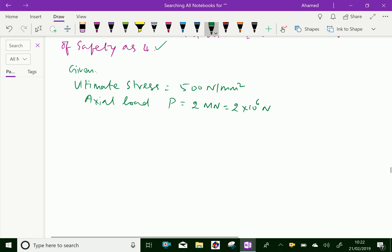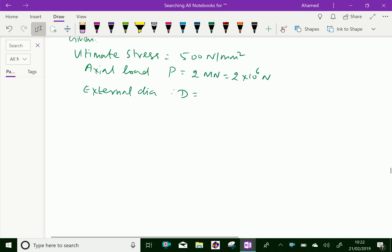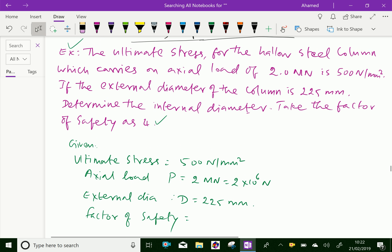External diameter of the column, that is D, equal to 225 mm. Factor of safety equal to 4.